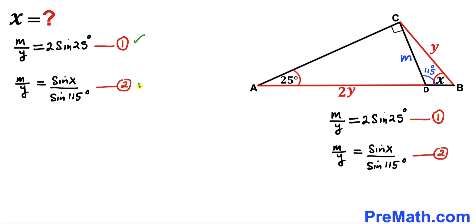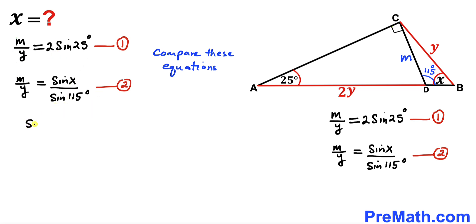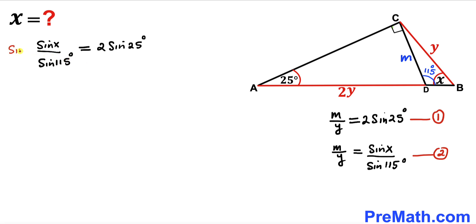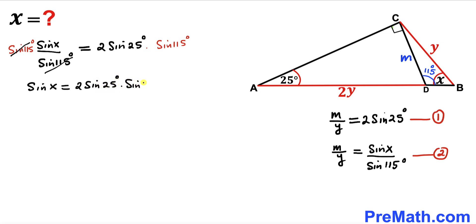Comparing equations 1 and 2, the left-hand sides are identical, so we can equate the right-hand sides: sin(x)/sin(115°) = 2·sin(25°). Multiplying both sides by sin(115°), we get sin(x) = 2·sin(25°)·sin(115°). This is equation 3.